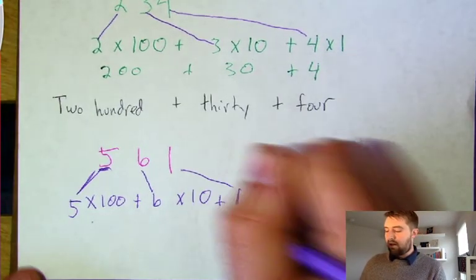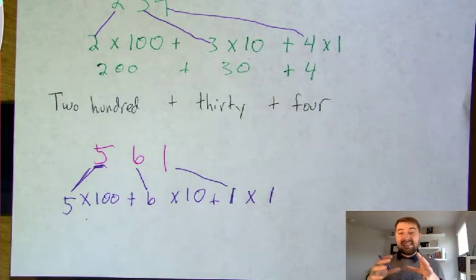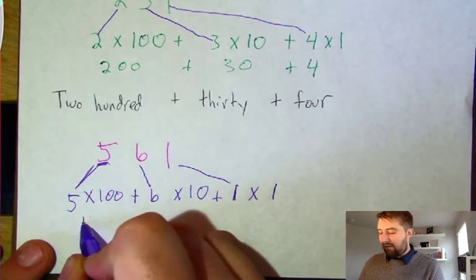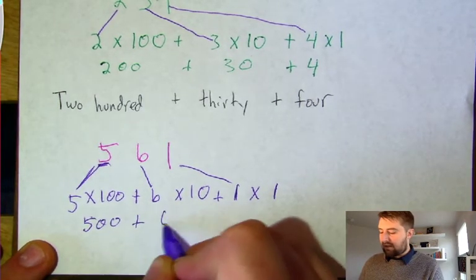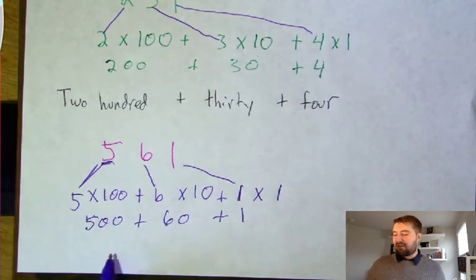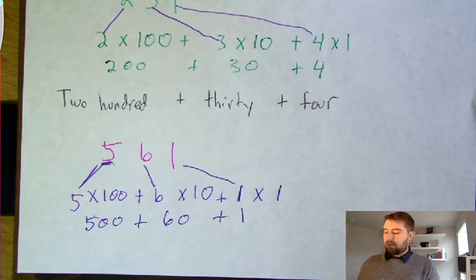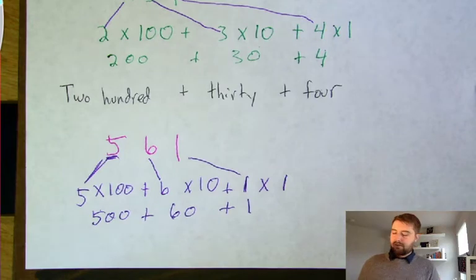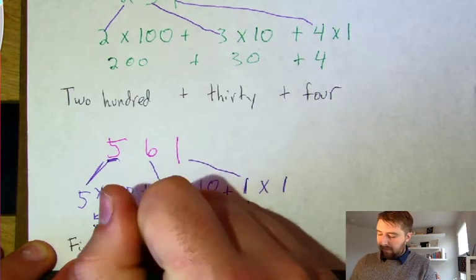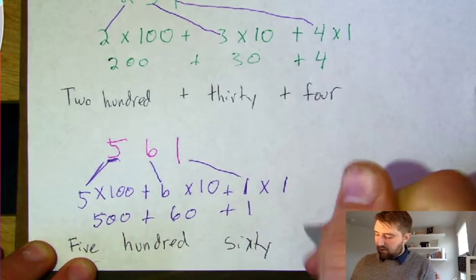We add plus signs between them: five times one hundred, plus six times ten, plus one times one. If we condense that by solving each multiplication expression, we get five hundred plus sixty plus one. Five hundred plus sixty plus one does equal five hundred sixty-one, so we are good to go. We can also write this out in words: five hundred sixty-one.